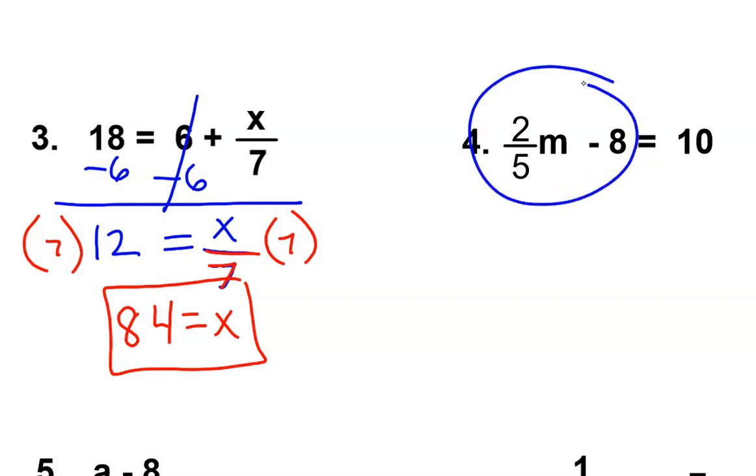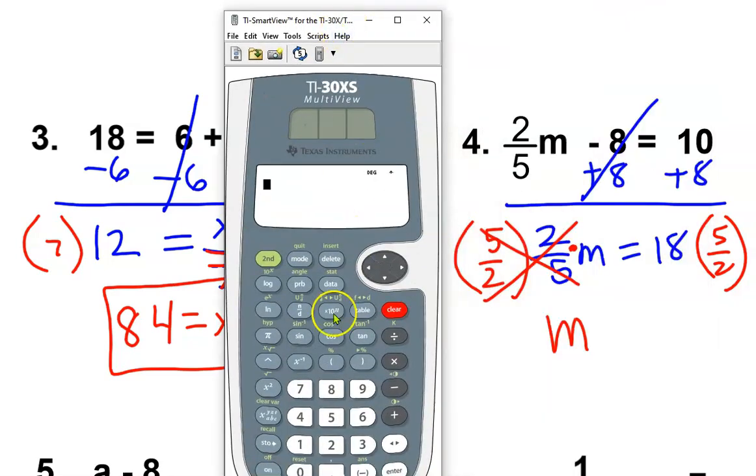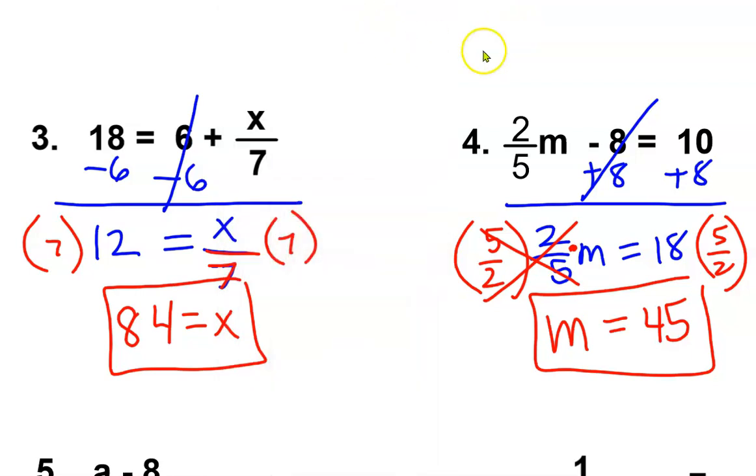One more time. Locate the variable. Clear the constant first. Now the inverse of multiplying is dividing, but we don't divide by fractions. We multiply by the reciprocal. Cross off your multiplicative inverse, and this time I'm going to use a calculator. Eighteen times 5 over 2. And this calculator has a fraction button right here. That came out nice and neat.